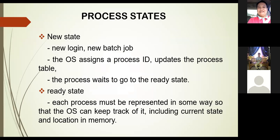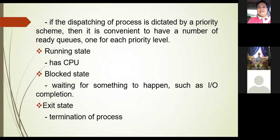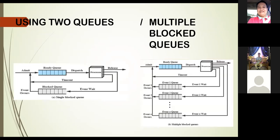Process state transitions: New state — a new user logs in or a new batch job is submitted. The OS assigns a process ID, updates the process table, and the process waits to go to the ready state. Ready state — each process must be represented so the OS can keep track of it including current state and location. If dispatching is based on priority it is convenient to have multiple ready queues, one for each priority level. Running state — the process has the CPU. Blocked state — waiting for something to happen such as input/output completion. Exit state — termination of the process.